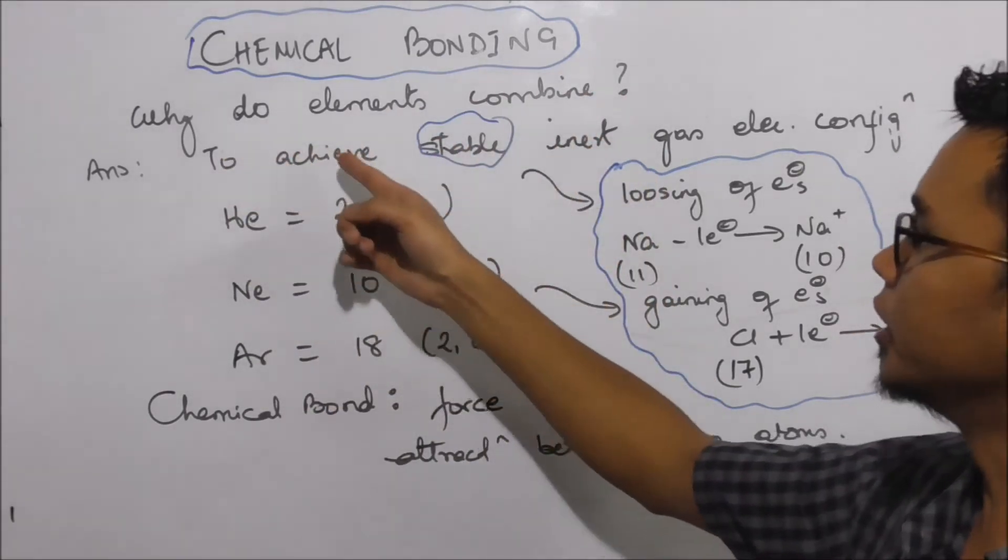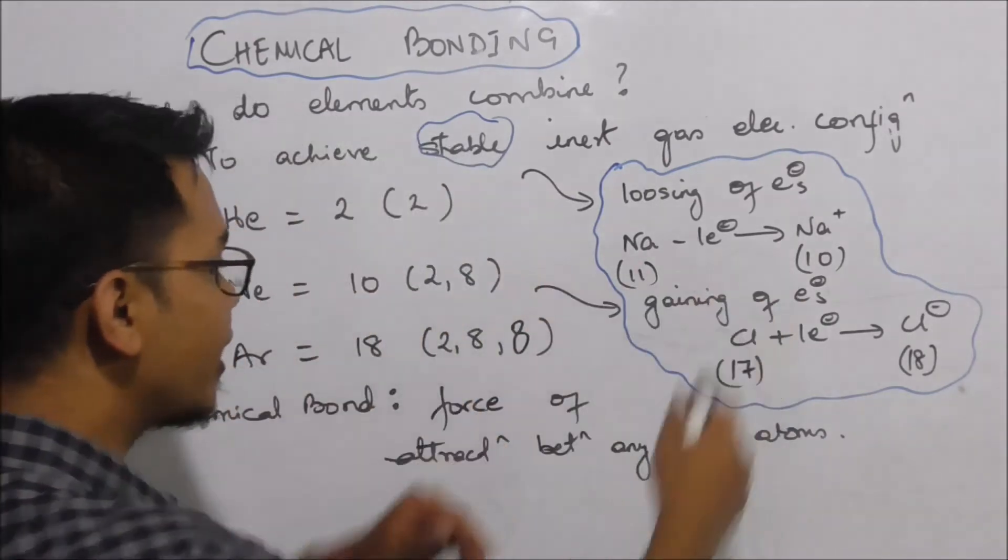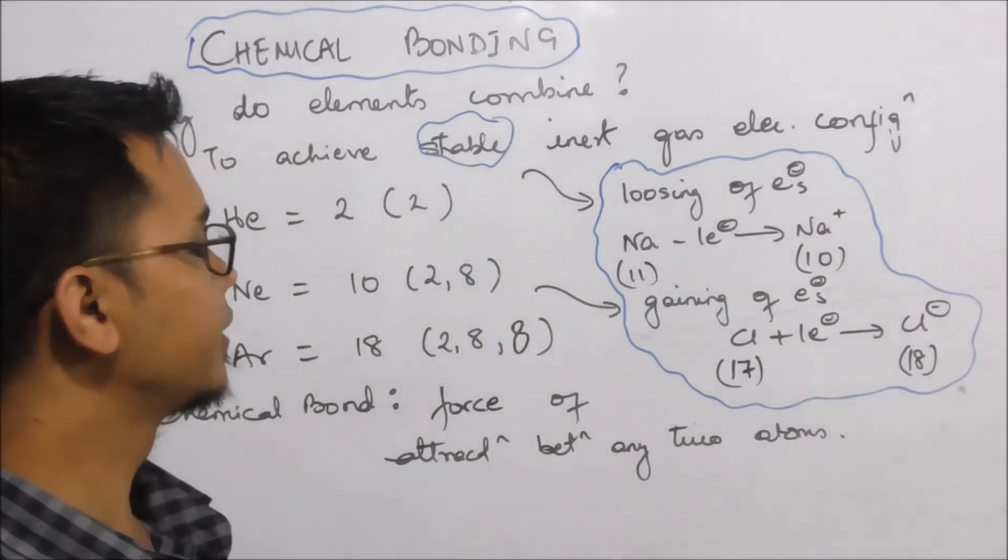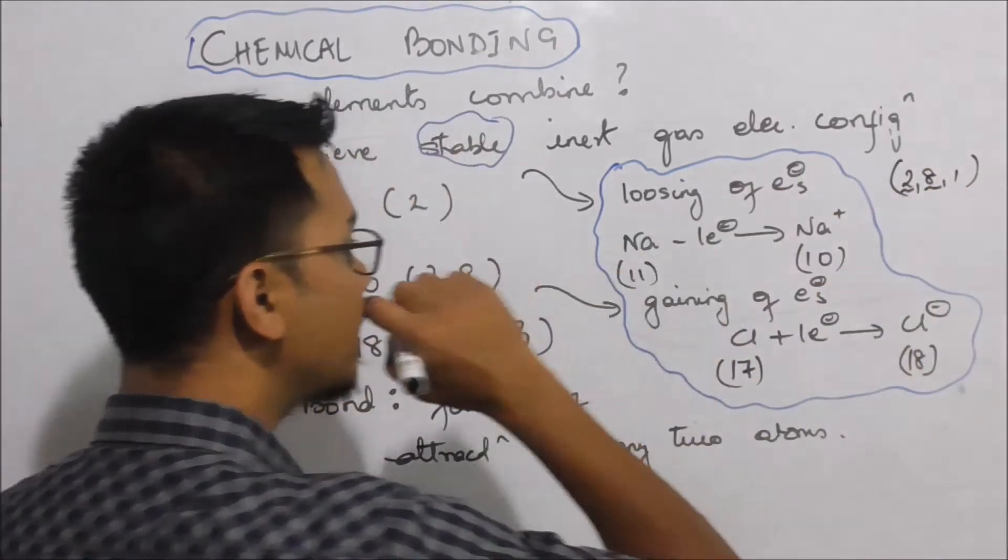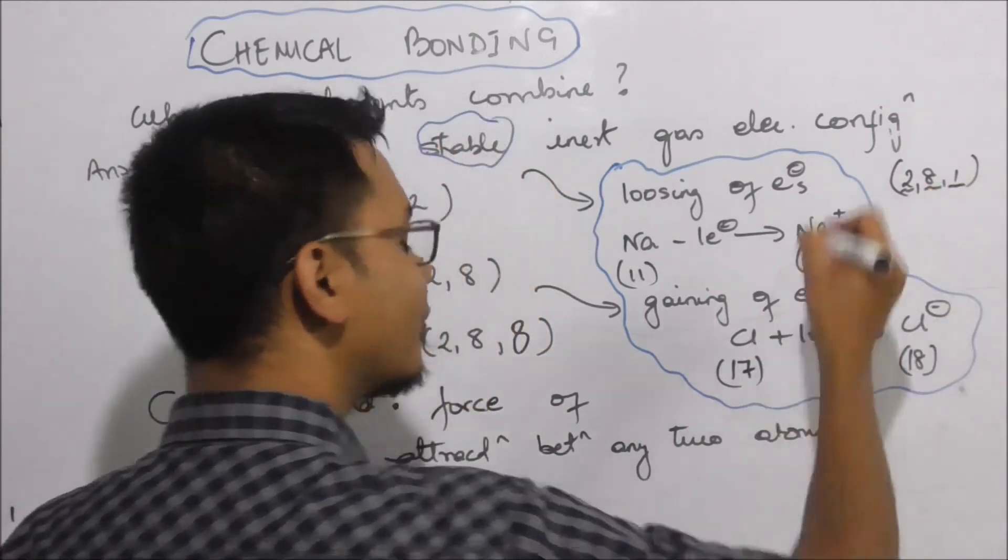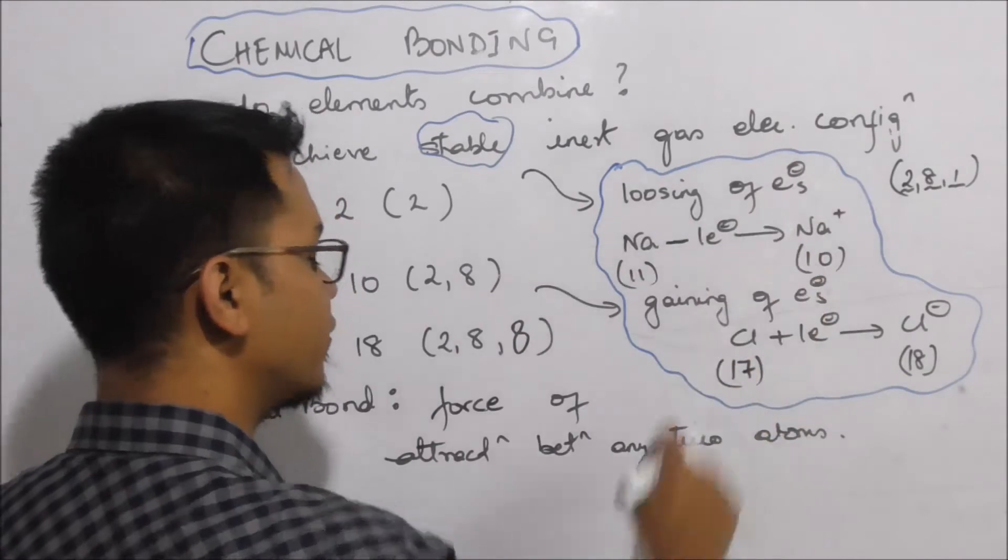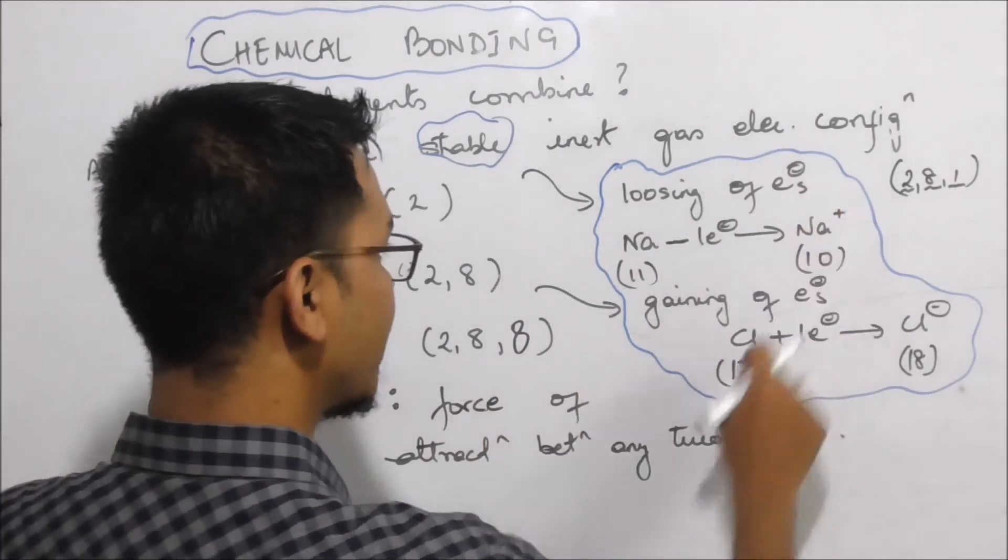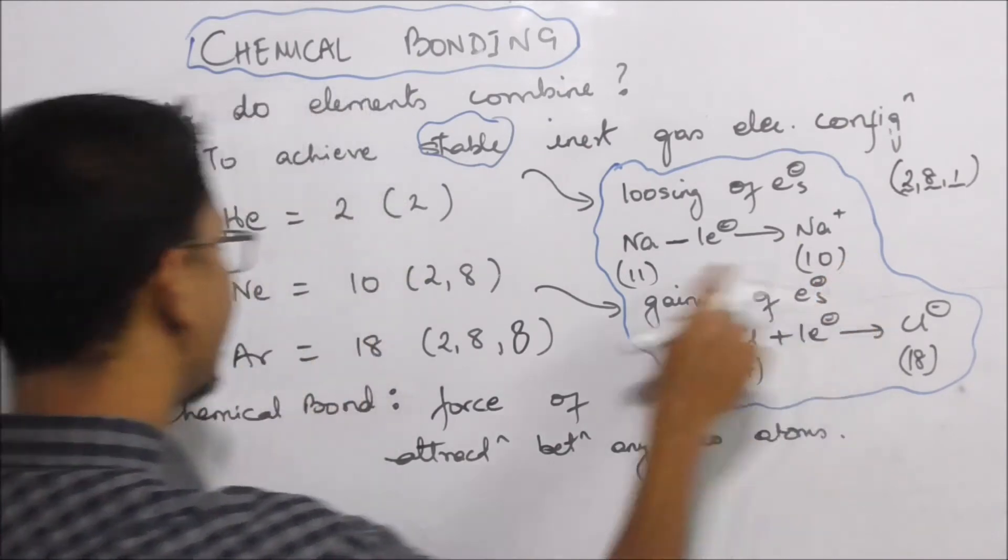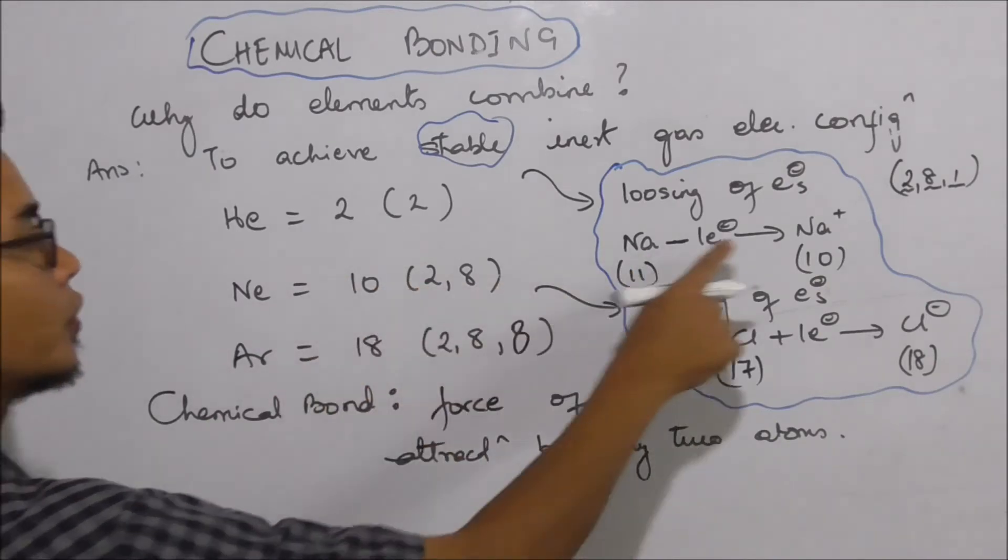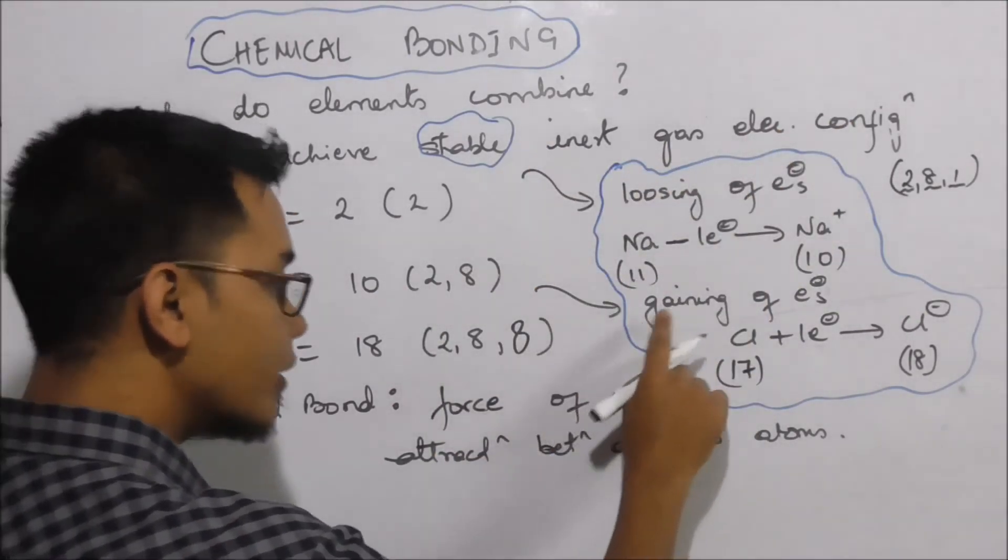Why do elements combine? In order to achieve stability. Sodium atomic number is 11: 2, 8, and 1, but it is unstable. It has to lose one electron with help of ionization energy to become Na+ and be stable. They can achieve inert gas electronic configuration by losing or gaining electrons.